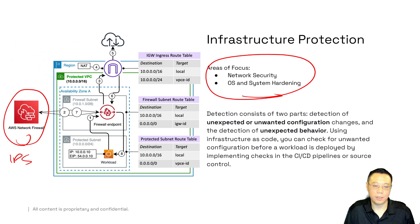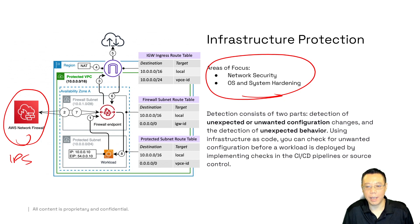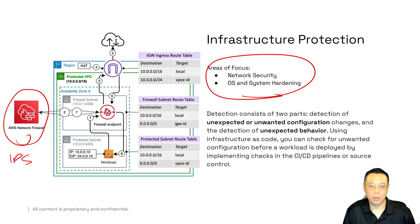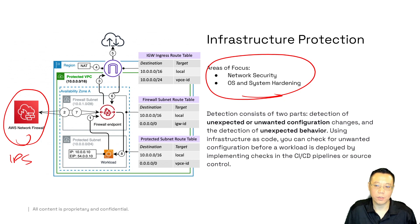AWS Network Firewall functions as an intrusion prevention system. Unwanted configuration and unexpected behavior is still detected, but you're also actually in a prevention mode now — using the firewall as a layer of security between you and a lower zone of trust.